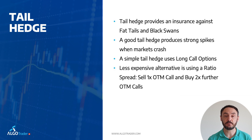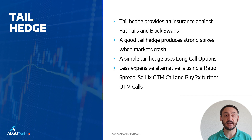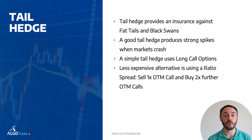A good tail hedge produces strong spikes when the market crashes. A tail hedge can be as simple as using a long call option. That might be a little expensive, so a good alternative is using a ratio spread. A ratio spread is typically made up of selling one out-of-the-money call and buying two more further out-of-the-money calls.